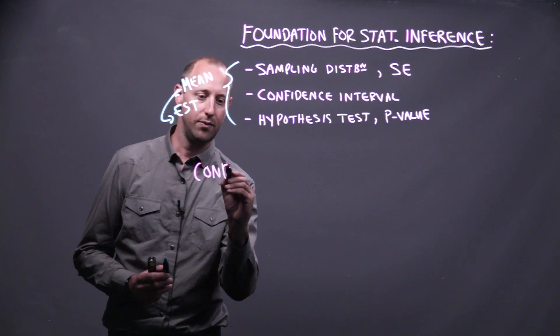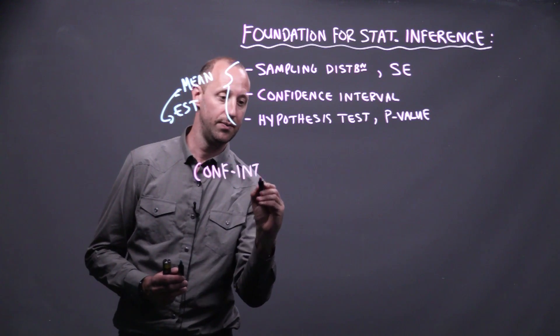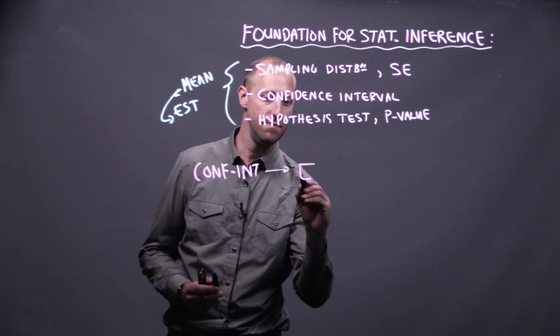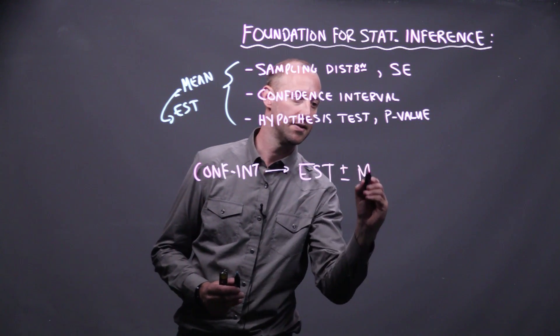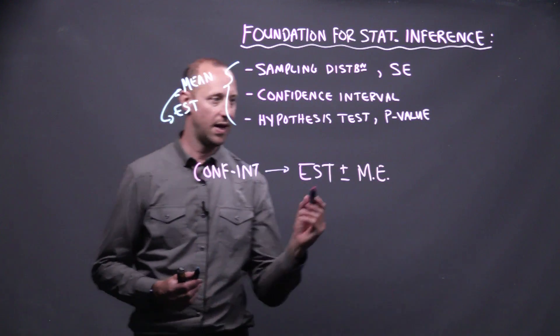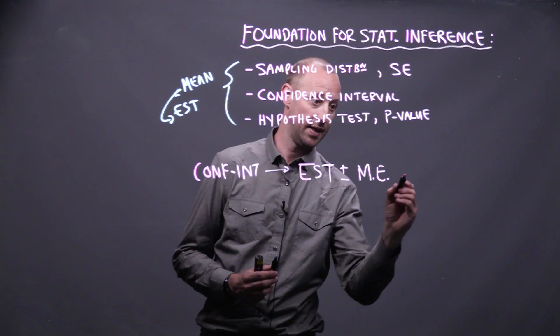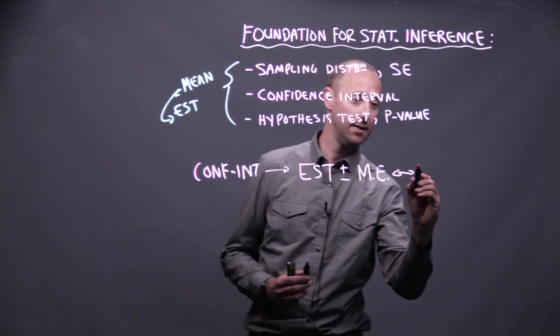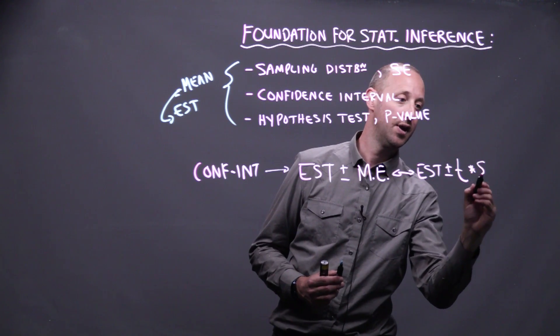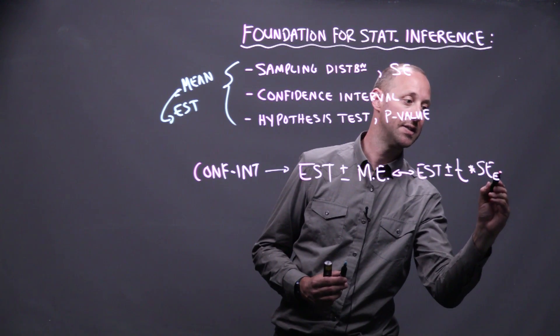So, in general, we have this idea of a confidence interval, and it's usually going to take some form of estimate plus or minus some margin of error. In our particular case, it's usually going to look like the estimate plus or minus some t-value times the standard error of the estimate.